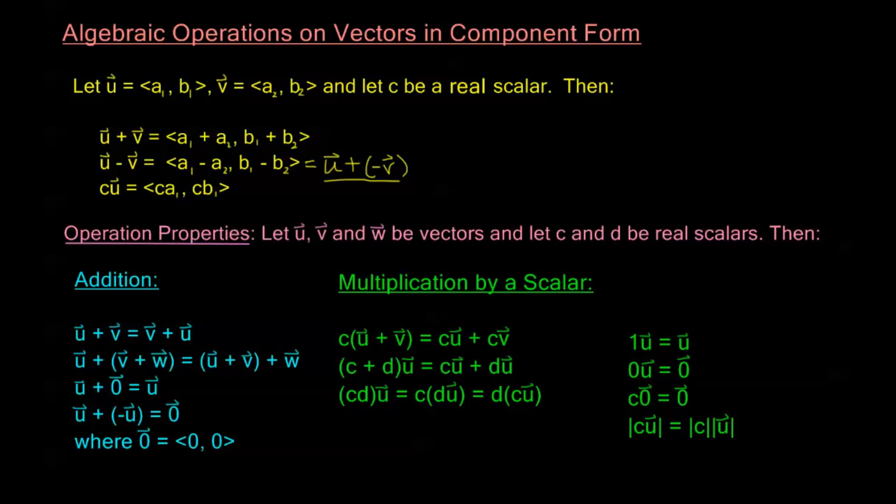Now let's take a look at multiplication by a scalar. Multiplication by a scalar, we have two different distribution properties. If we have a scalar c multiplied by the sum u plus v, we can distribute c and we get cu plus cv. If we have the sum of scalars, c plus d multiplied to some vector u, we can also distribute u over these scalars. So we get cu plus du.